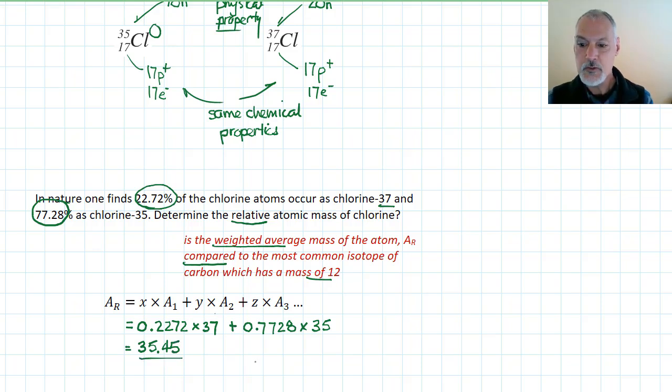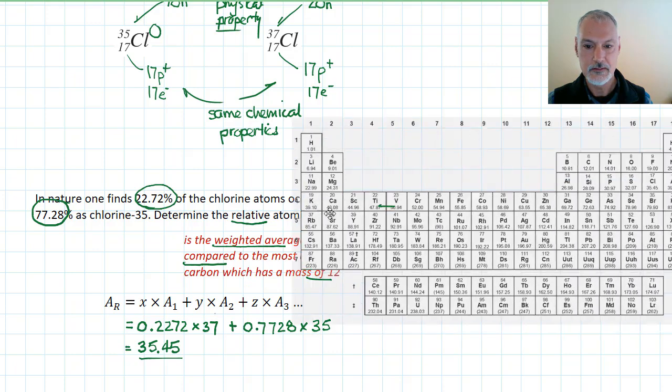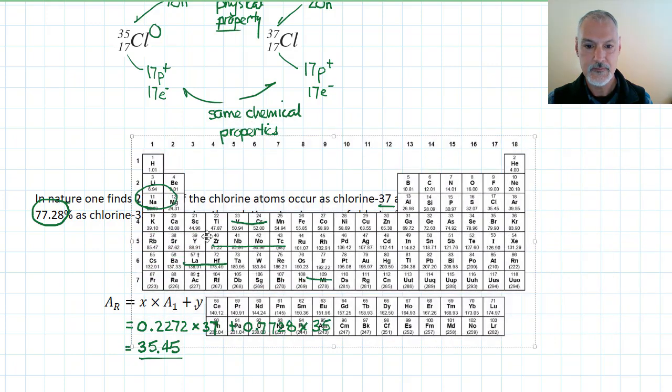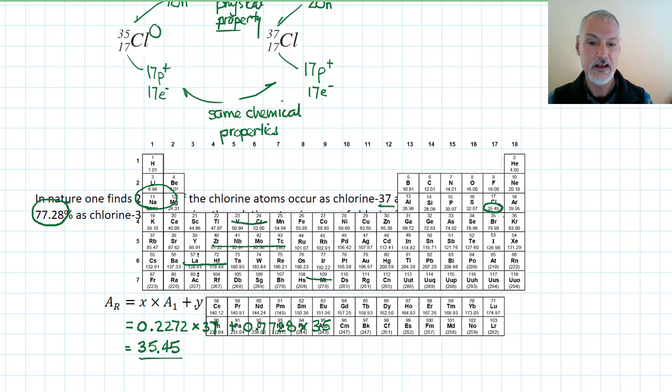Now, that is what we call a weighted average mass. There is no chlorine that weighs 35.45. Chlorines will either weigh 37 or 35. This is just an indication of their average mass. When you look at a periodic table, that's typically the number that you see. So when I look here at chlorine underneath here, and I see 35.45, that's telling me the weighted average mass of chlorine atoms.